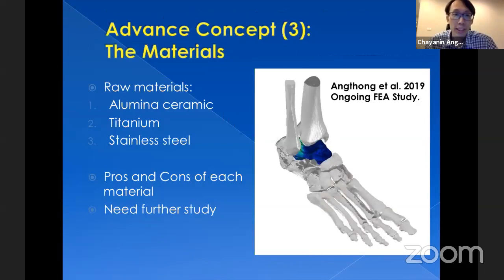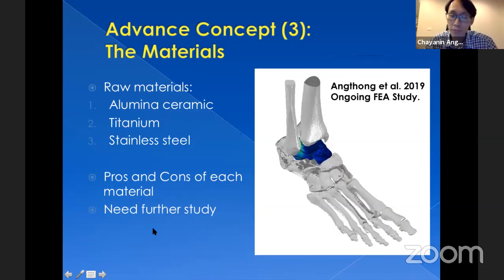Issue number three — the last concern — is about material. Nowadays we have total talus prostheses from several materials: alumina ceramic from Takakura and Taniguchi, titanium from my technique, and stainless steel from my technique and the Han technique. We have no consensus on the material of choice for talus prostheses and need further study. I have an ongoing finite element analysis study to determine what material should be the material of choice for the total talus prosthesis.